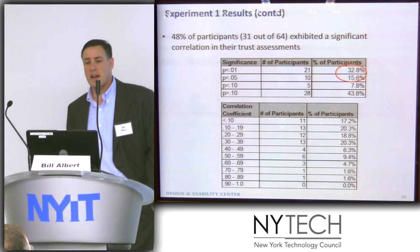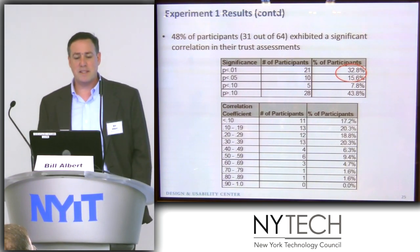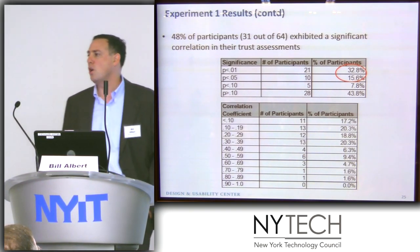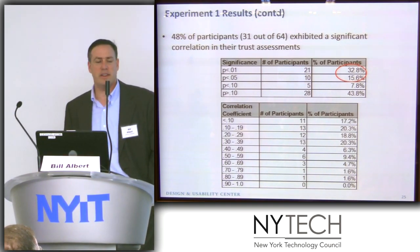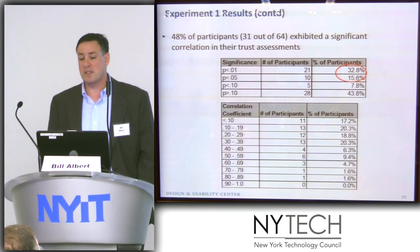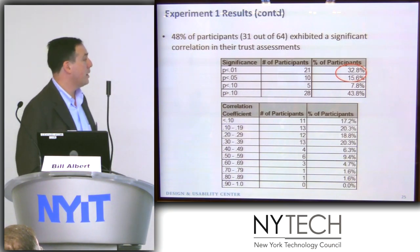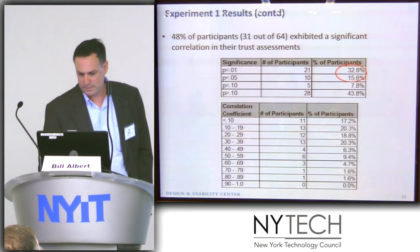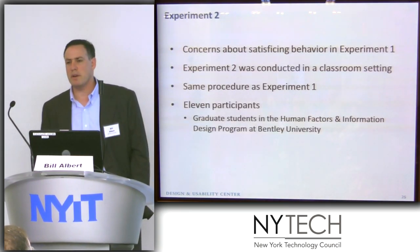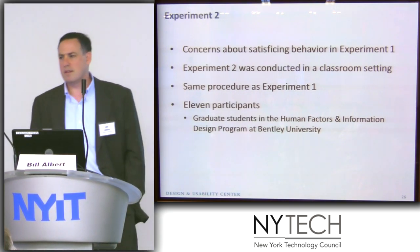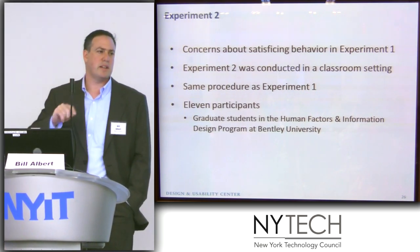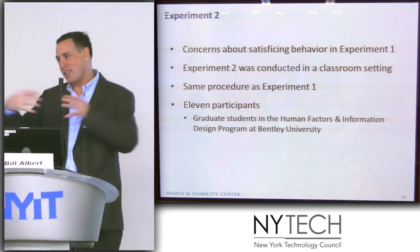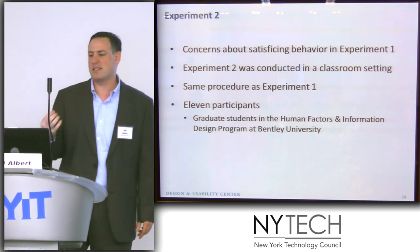Looking at it by participants, basically just under 50% of the people exhibited a significant correlation in their trust assessments — half of the people were extremely consistent, above essentially above chance, in their ratings from one site to the other. We ran a second experiment because we were wondering maybe people just started getting bored with the study and started clicking 'I trust it' repeatedly — what we'd call satisficing behavior. So we conducted another experiment in the classroom with 11 people, all grad students at Bentley.